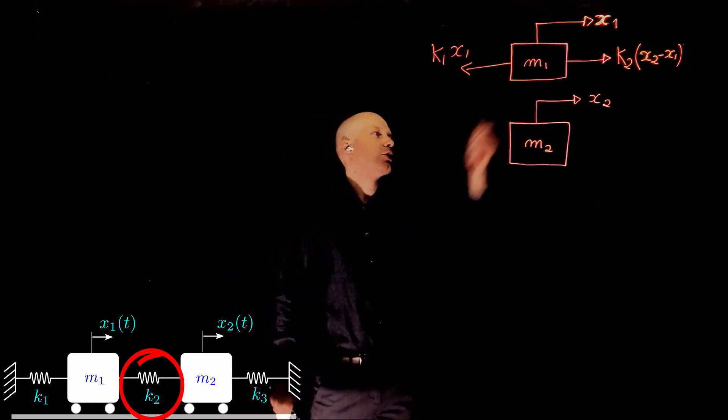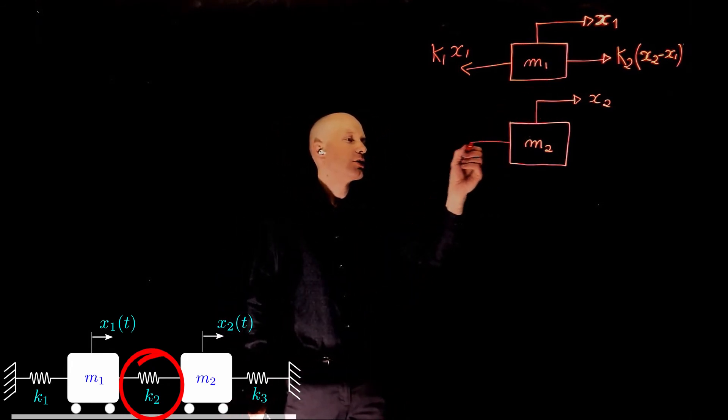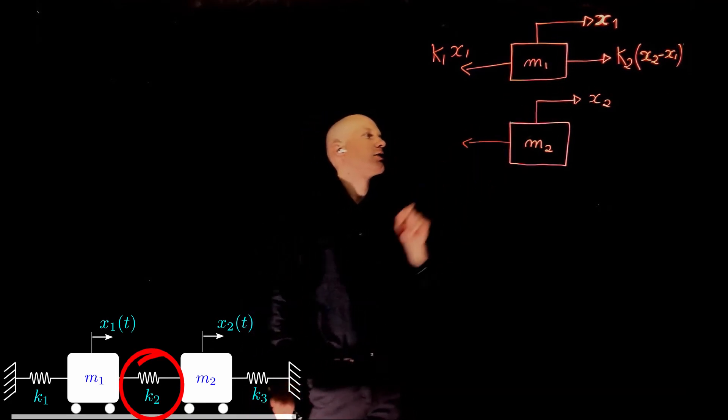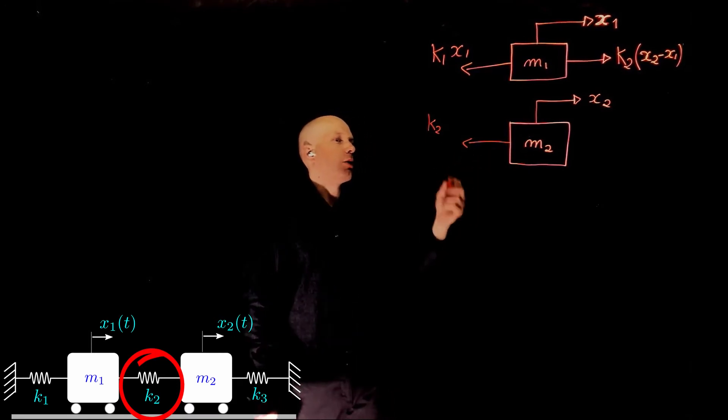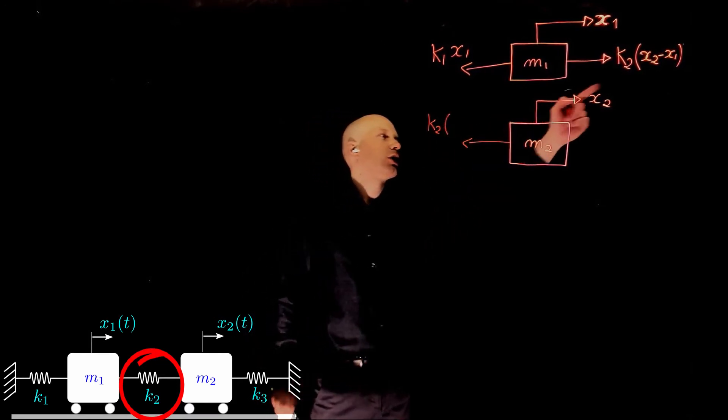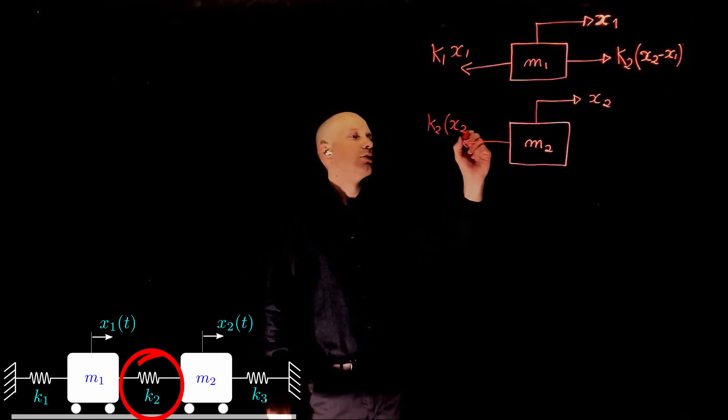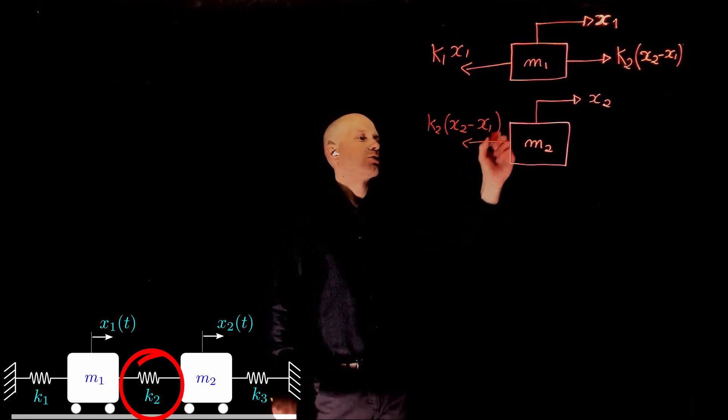because it is slowing it down. And this force is exactly the same as that one that pulls on m1, but it is applied to m2 in the opposite direction. So the magnitude is k2 times x2 minus x1.